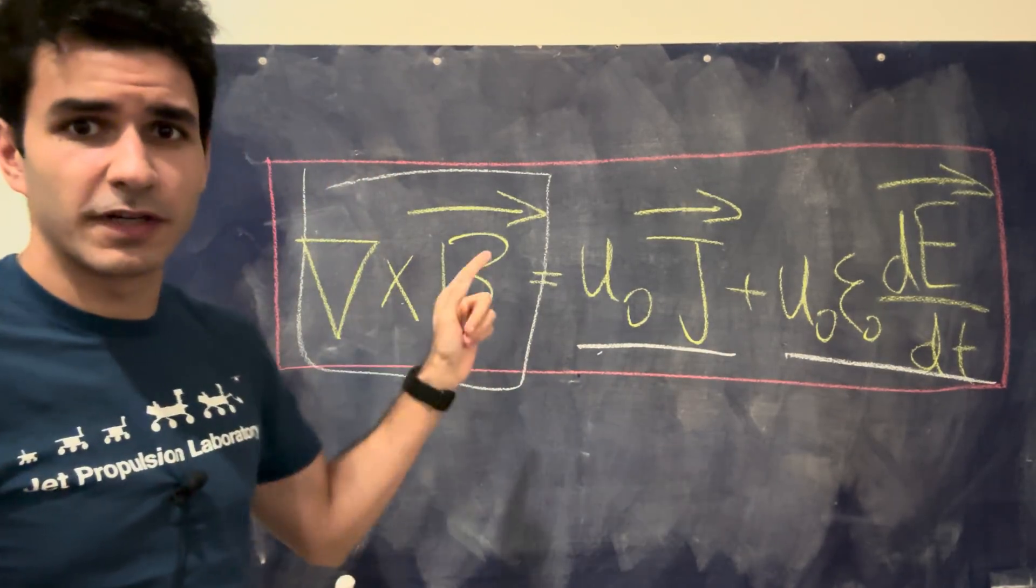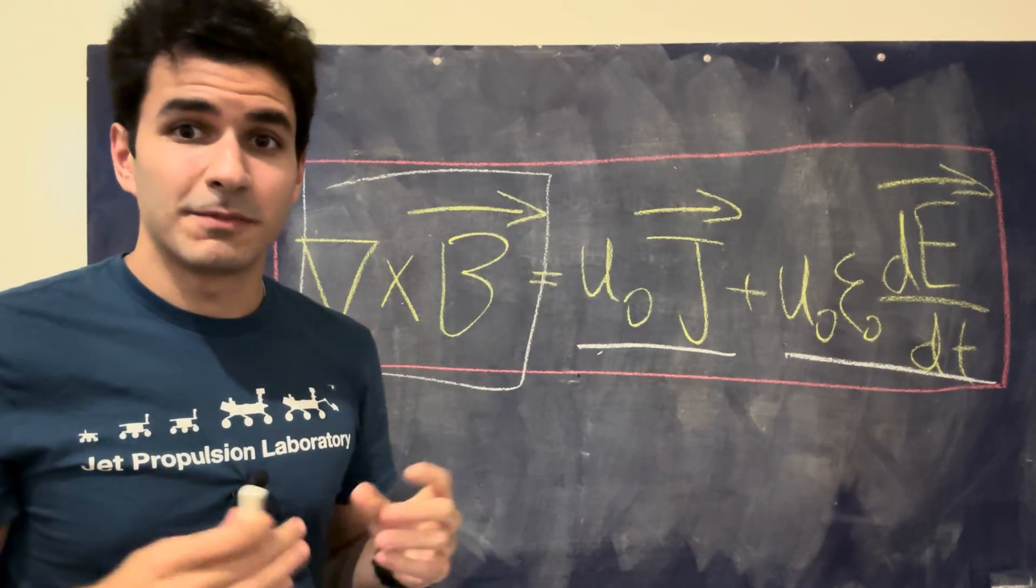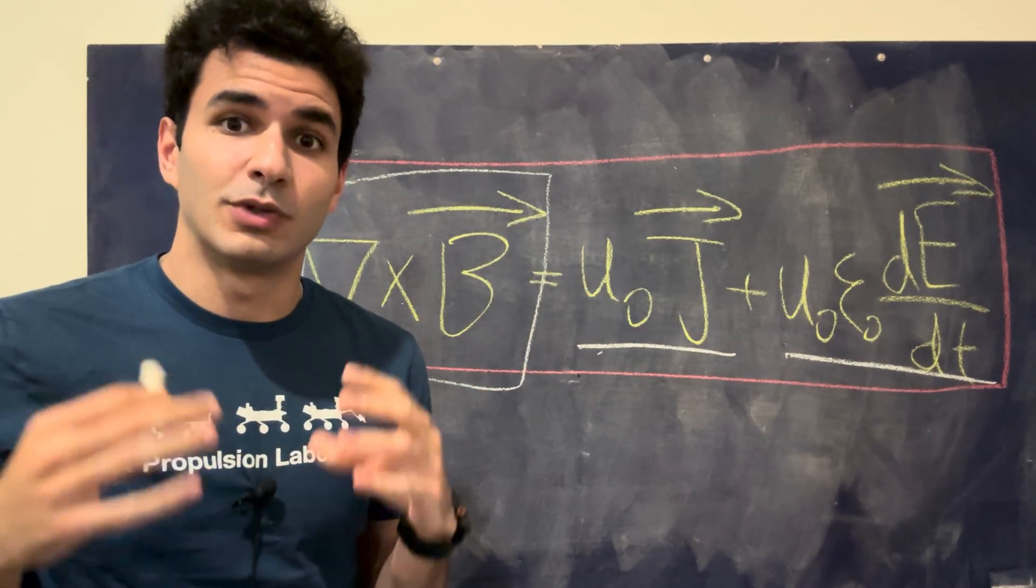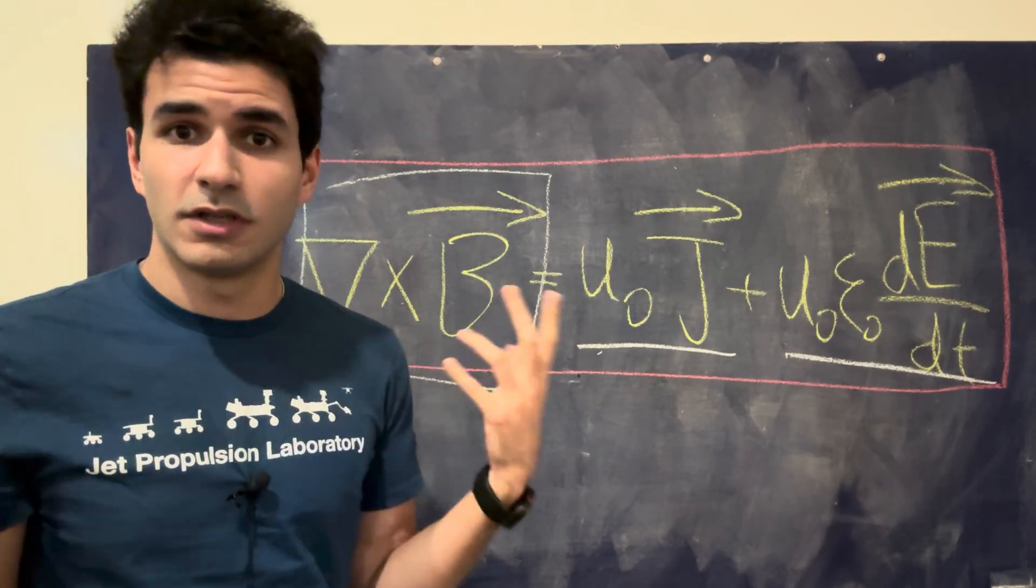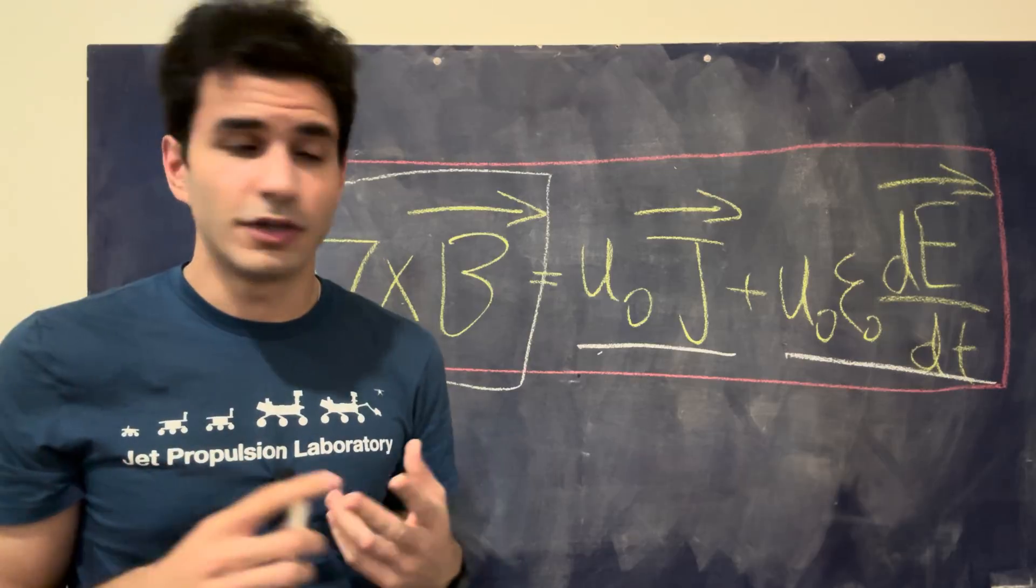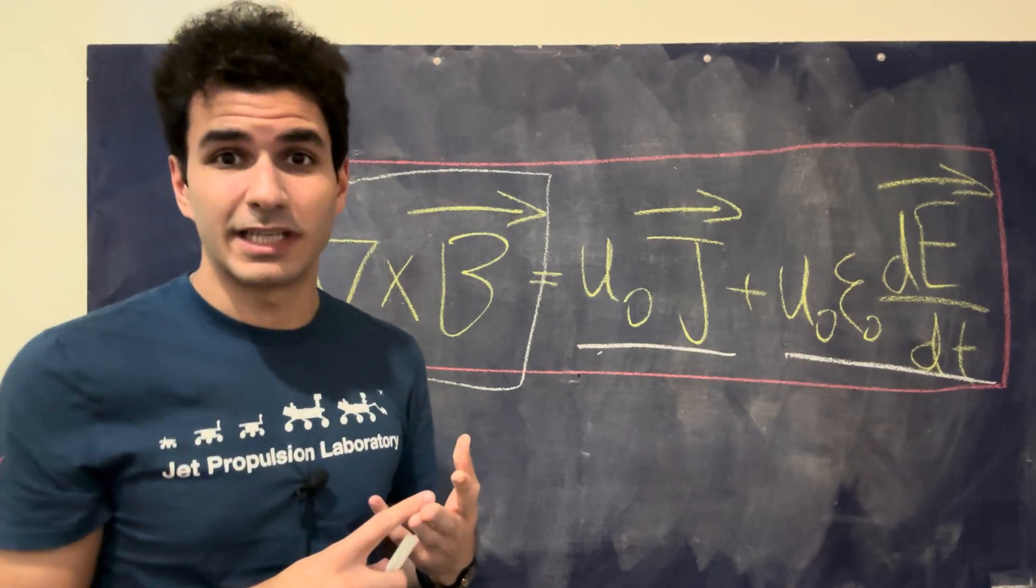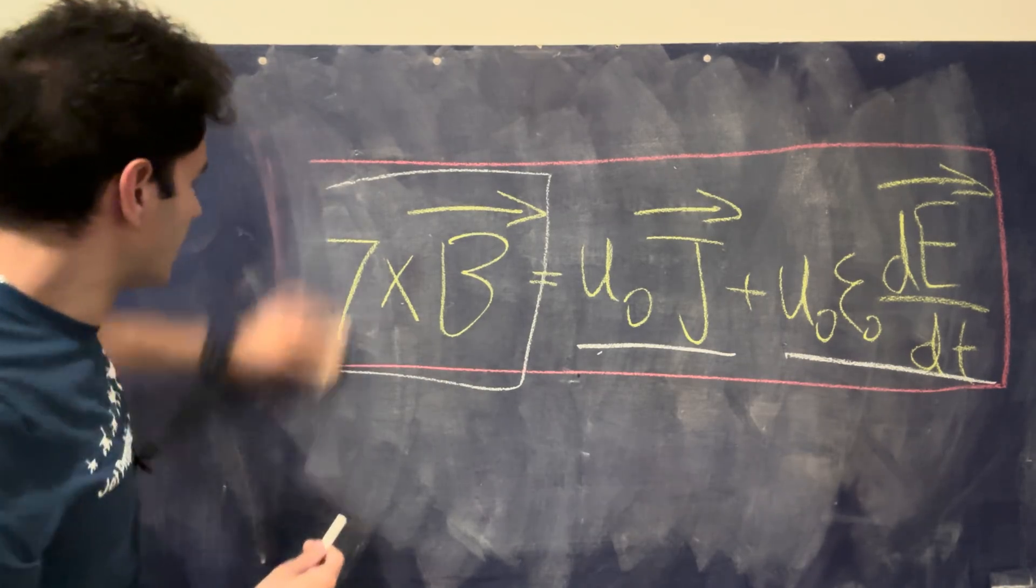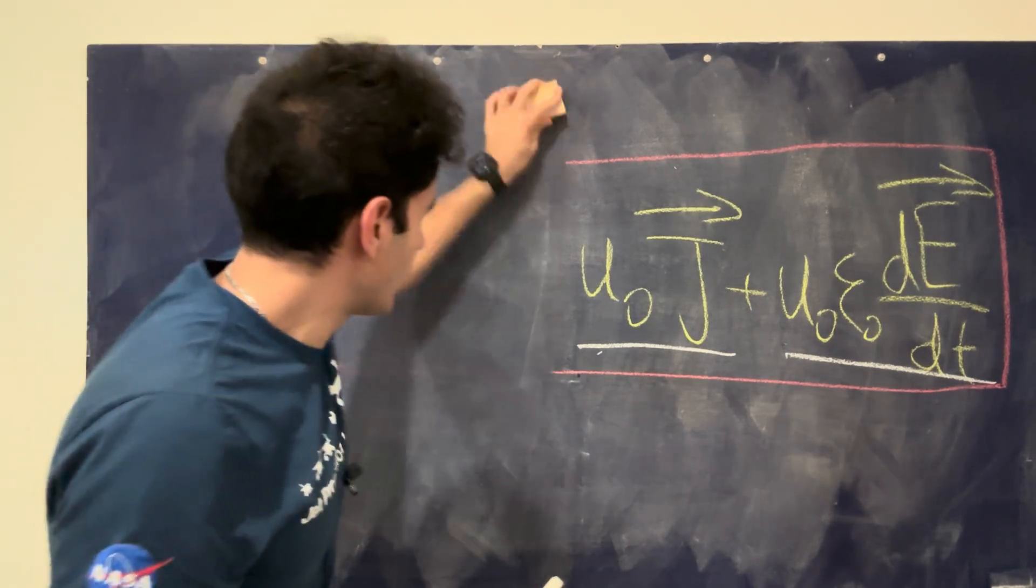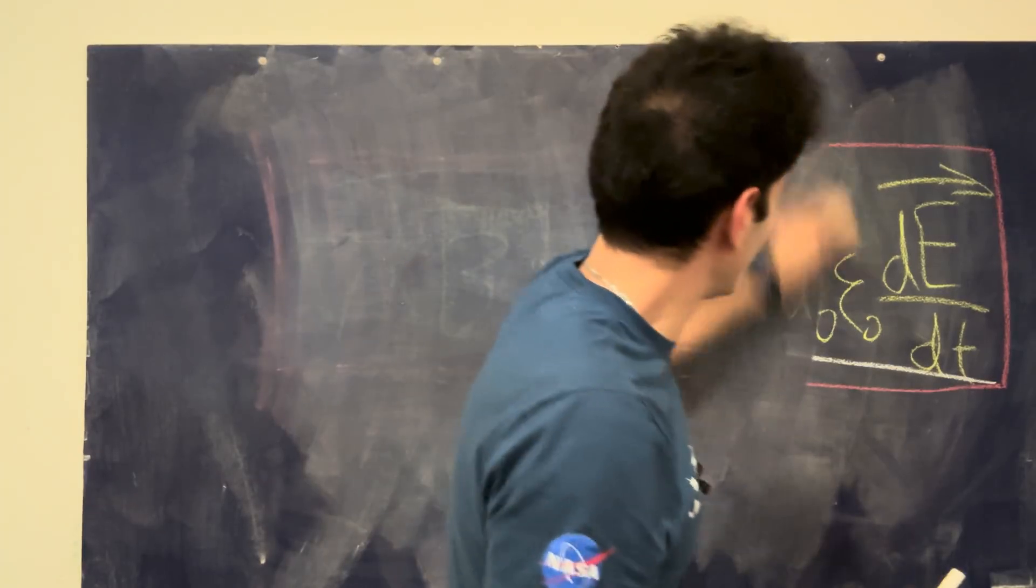I'm going to explain what each variable means, how this equation comes together, and then in the second half of the video, give you actual examples of how this is used in things like space communication, wireless communication in general here on Earth, any type of electronic application, and even things such as AI. So I'm going to go ahead and erase this and just rewrite it from scratch so I can give it to you variable by variable.